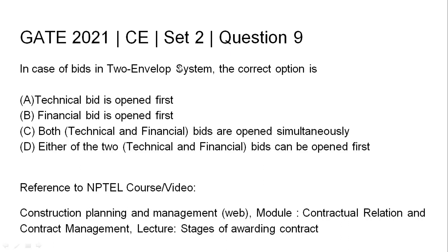In case of bids in a two envelope system, the correct option is: first option - technical bid is opened first; second option - financial bid is opened first; third option - both bids are opened simultaneously; fourth option - either of the two bids can be opened first.